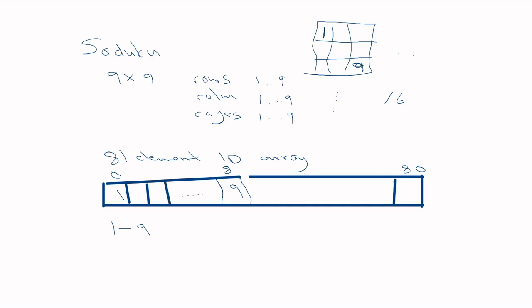The fitness function for Sudoku checks 27 constraints — 9 rows, 9 columns, and 9 sub-cages. For each row, check positions zero to eight are all unique; for columns, check every ninth position; and for the sub-cages, check those specific sets of positions. Every constraint that's satisfied earns a point, or every violation gets penalized, making it either a maximization or minimization problem.